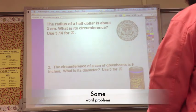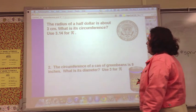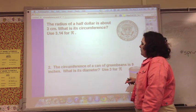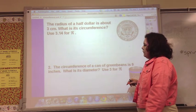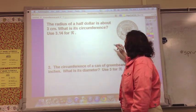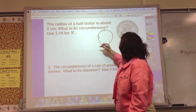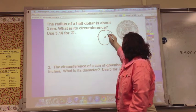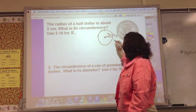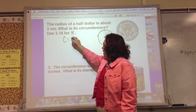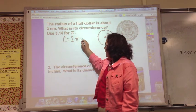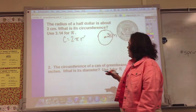Now you're going to see these in word problems. The radius of a half dollar is about 3 centimeters. What is the circumference? Use 3.14 for pi. If you've got this half dollar and the radius is 3 centimeters, then to find circumference you're going to use 2 pi r because you've got the radius. Fill this in and come up with your answer.